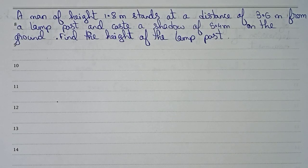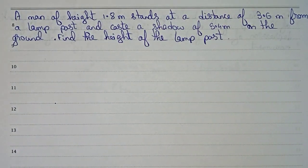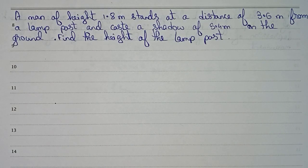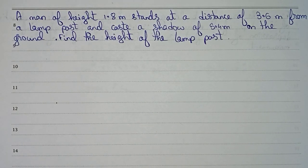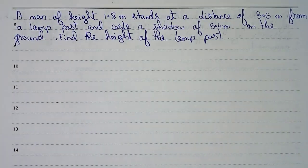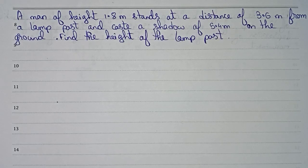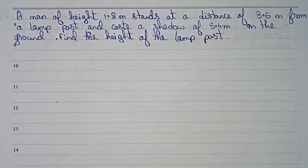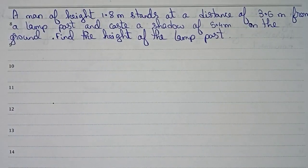Hello guys, welcome to this video. In this video our question is: a man of height 1.8 meter stands at a distance of 3.6 meter from a lamp post and casts a shadow of 5.4 meter on the ground. Find the height of the lamp post. So first we'll draw a diagram of this question.